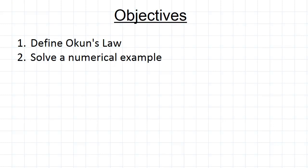Now we're going to explore the relationship between unemployment and GDP using something we call Okun's Law. This is useful for a variety of purposes, and to show how it can be used, we'll step through a numerical example.